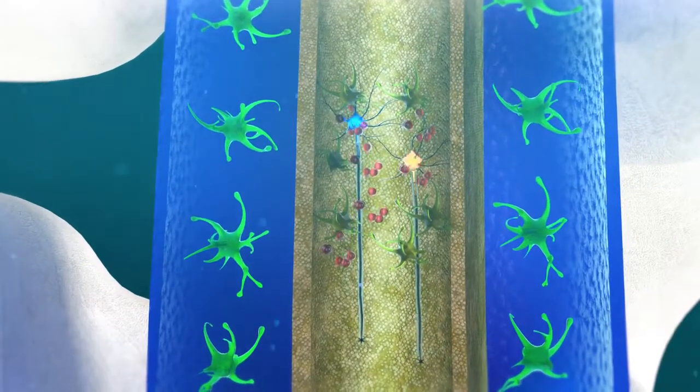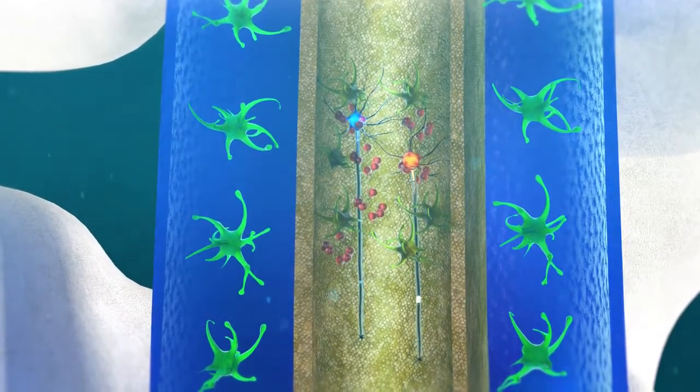Once injected, the astrocytes get distributed through the CSF and support motor neurons by multiple mechanisms that work in tandem.